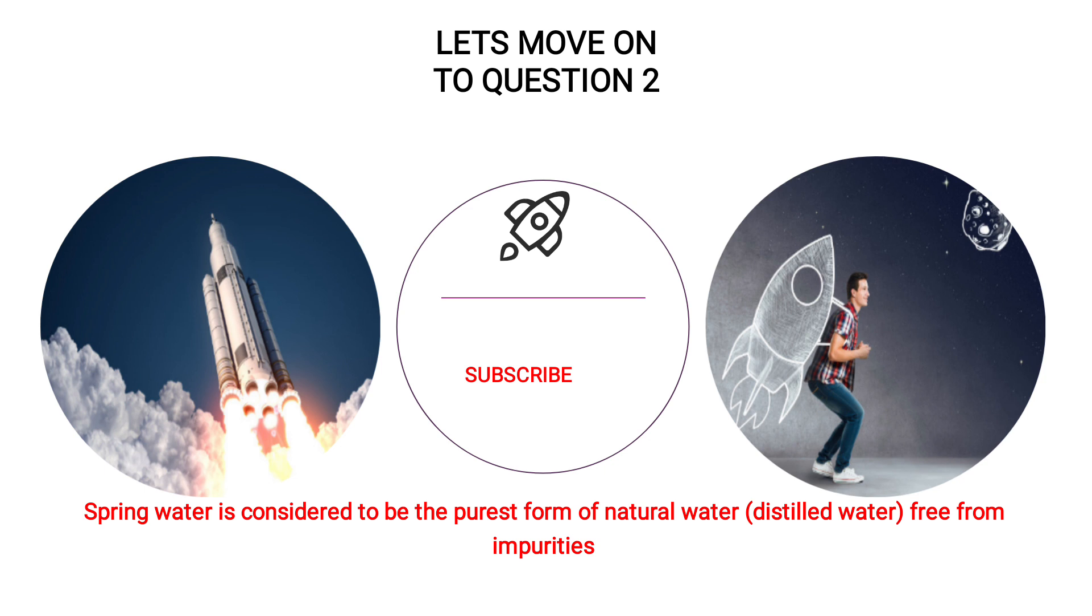Let us move on to the second question. Before moving on to the second question, in between we will see some of the important hints that can be asked for the examinations. For example, if they ask which is the purest form of natural water free from impurities, the answer will be spring water. Do remember, the answer will be spring water.